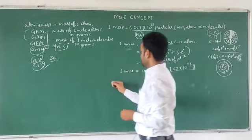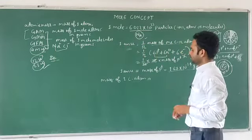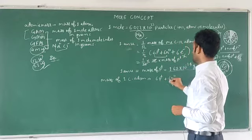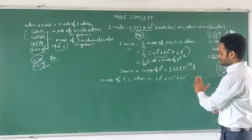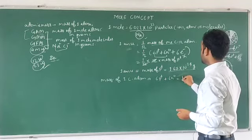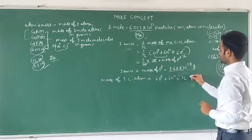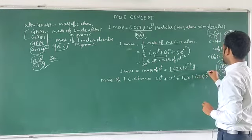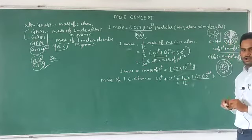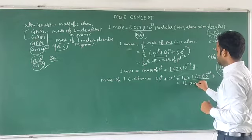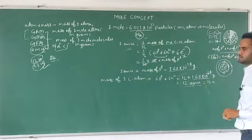Now let us say what would be the mass of 1 carbon atom. The mass of 1 carbon atom means 6 protons plus 6 neutrons — we do not include electrons because their mass is negligible. So that is 12 times the mass of a proton, which is 1.67 times 10 to the power minus 24 grams. But we know this number is the standard — the atomic mass unit — so the mass of 1 carbon atom is 12 AMU, or 12U.